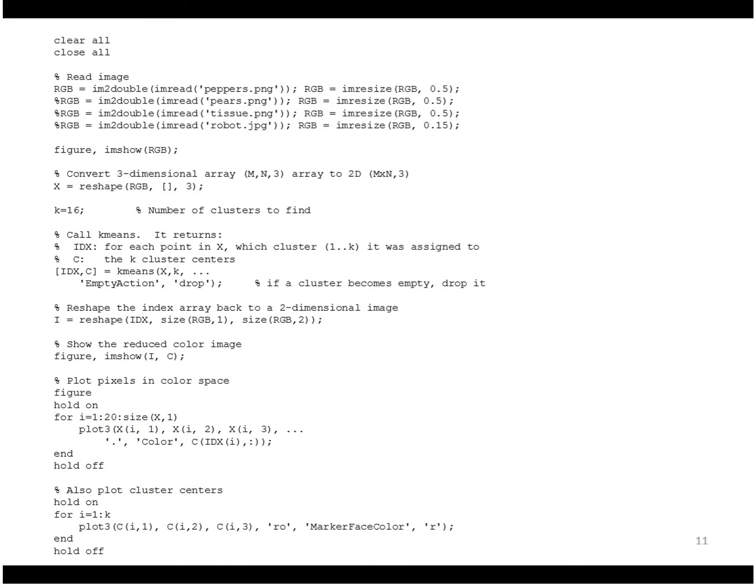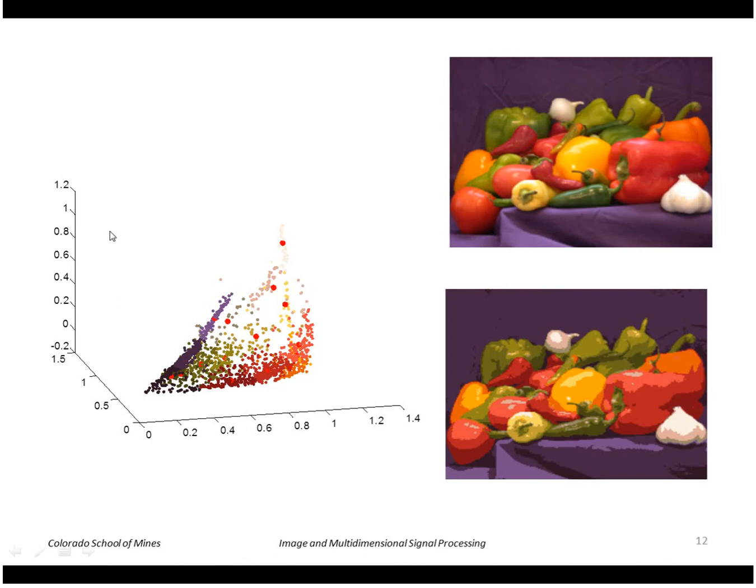So here I'm going to specify 16 clusters and this is what it's found. So this is the RGB space showing all of the pixels as dots and the big red dots are the discrete clusters that I found here.